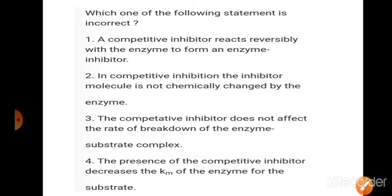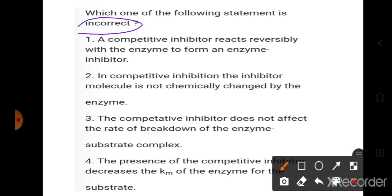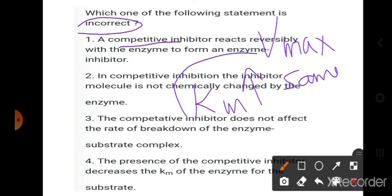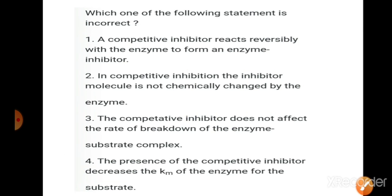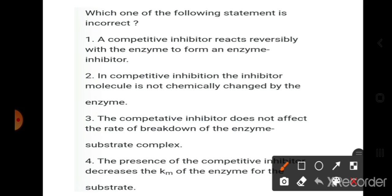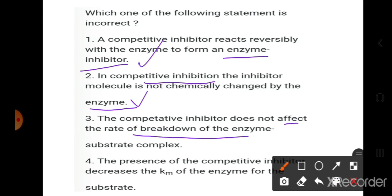Next: which statement about competitive inhibition is incorrect? In competitive inhibition, Vmax is the same but Km increases. The fourth statement says competitive inhibitor decreases the Km value — this is wrong. The other statements are correct: competitive inhibitor reacts reversibly with the enzyme; the inhibitor molecule is not chemically changed; and it does not affect the breakdown rate of the enzyme-substrate complex. So option four is the incorrect statement.